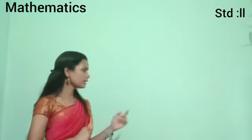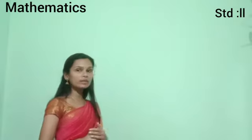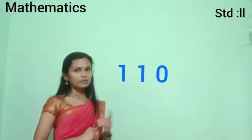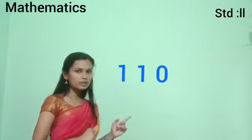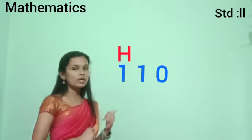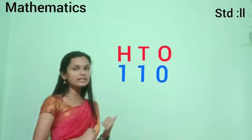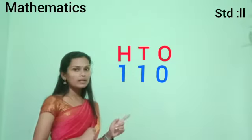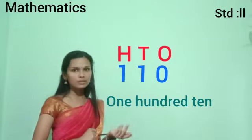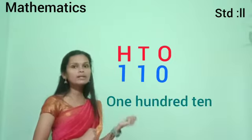Then, after 109, comes 110. The first digit 1 is in the place of 100's. If we take 1's and 10's together — 1 and 0 — which number is that? Yes, 10. So the number name of 110 is one hundred ten. Is it clear?